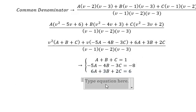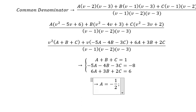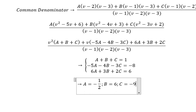So we got about A equals to negative one over two, B equals to six, C equals to negative number nine over two.